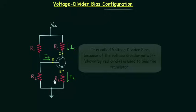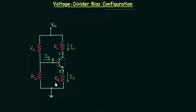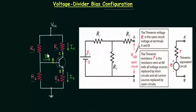In this circuit we have resistance RE and resistance RC, but there is no resistance RB. In place of resistance RB, we have two other resistances R1 and R2, and because of this we have to use Thevenin's theorem. If you don't know or don't remember how to use Thevenin's theorem, you may refer to the small introduction displayed on the screen.